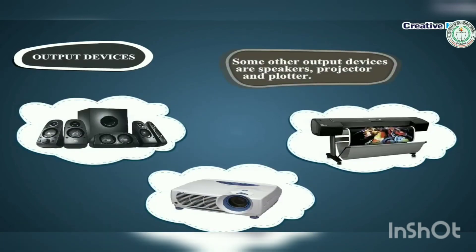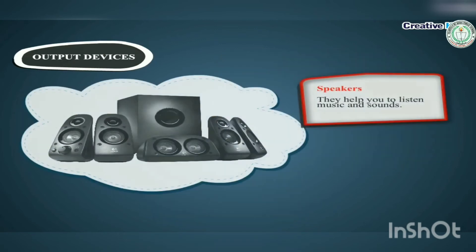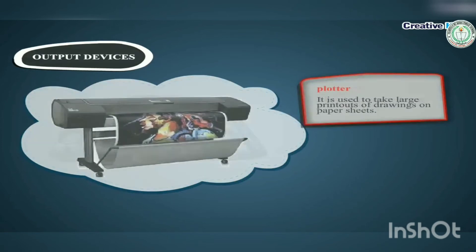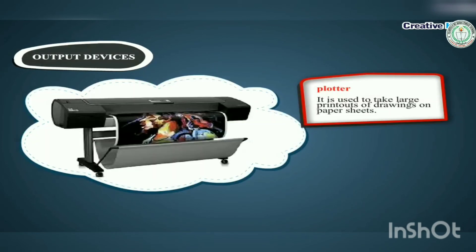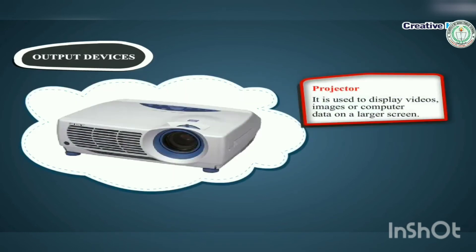Some other output devices are speakers, projector, and plotter. Speakers help you listen to music and sounds. Plotter is used to take large printouts of drawings on paper sheets. Projector is used to display videos, images, or computer data on a larger screen.